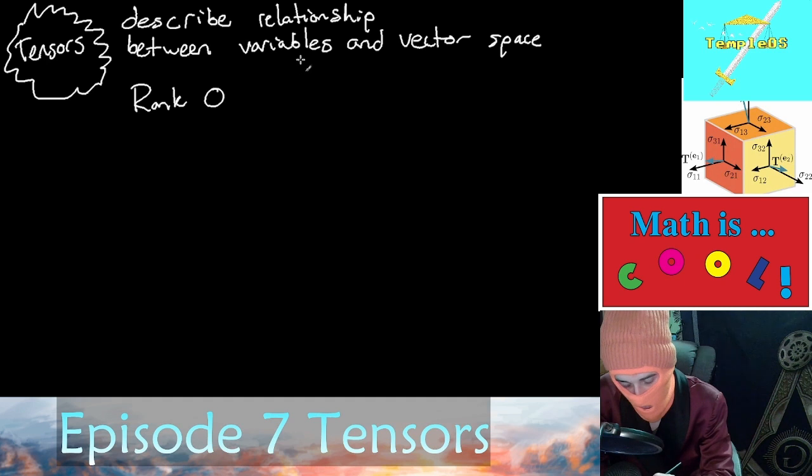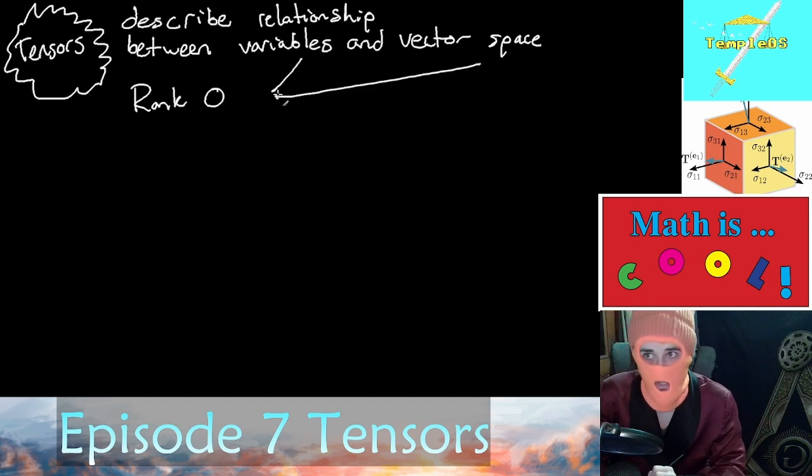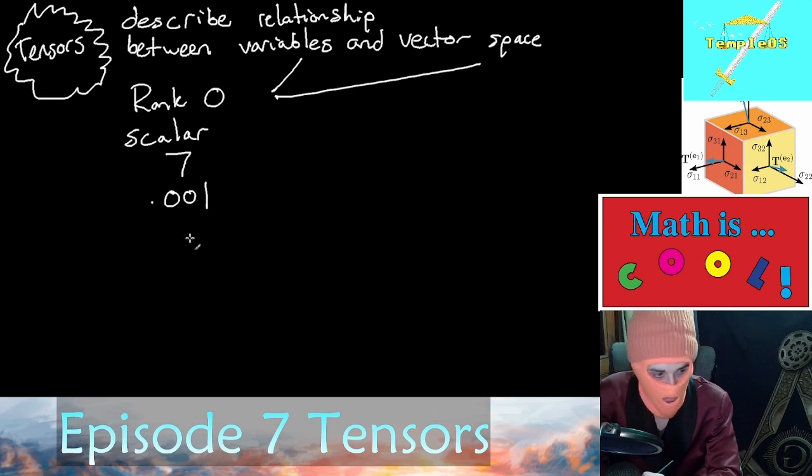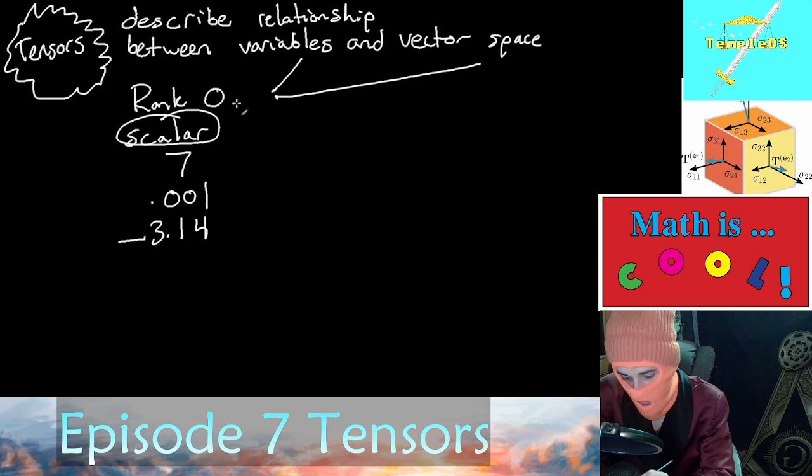So what's a rank zero tensor? Well, the relationship between a variable and vector space at rank zero is simply what's known as a scalar. So examples of scalars: 7.001, negative 3.14. These are all scalars, which are also known as rank zero tensors.